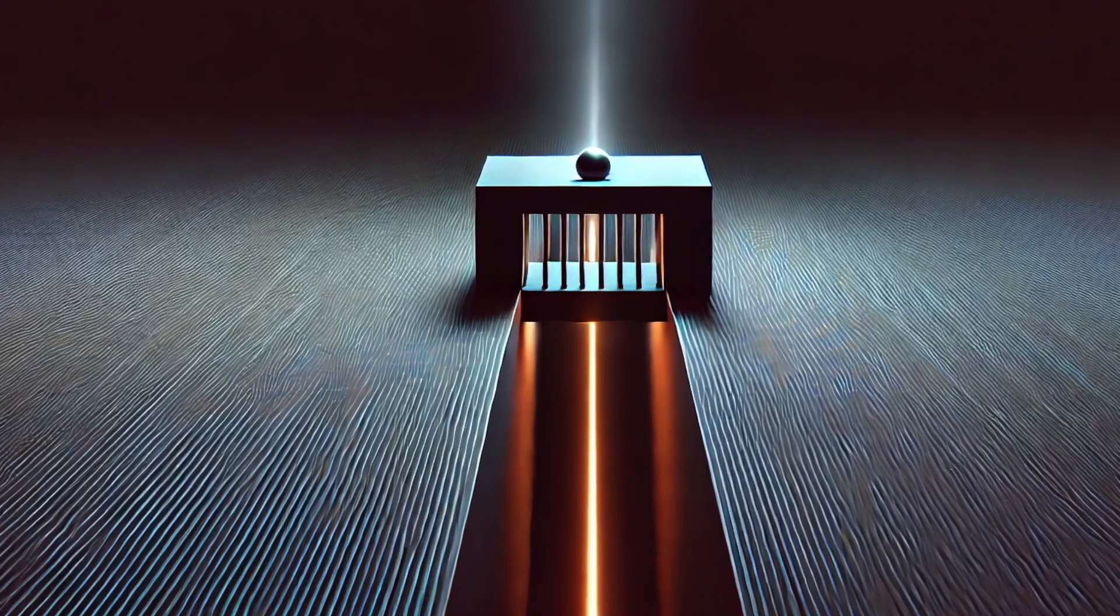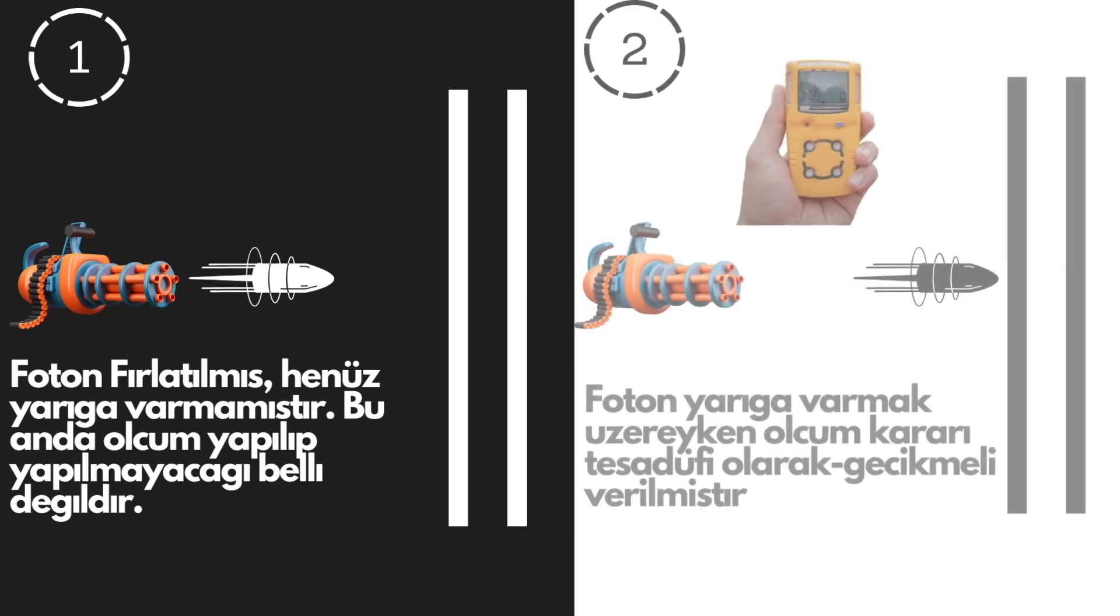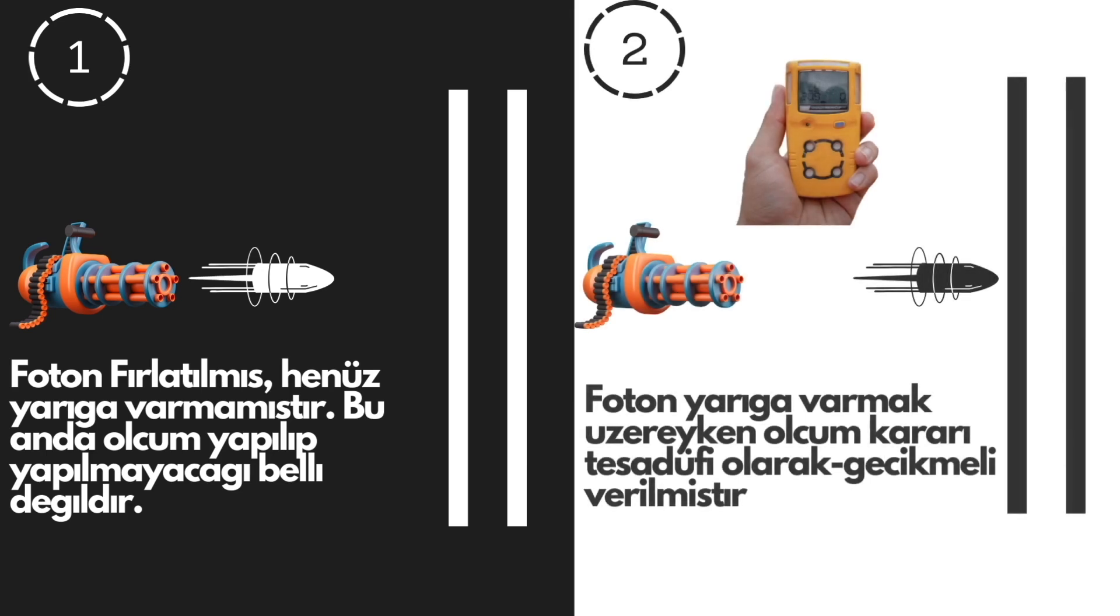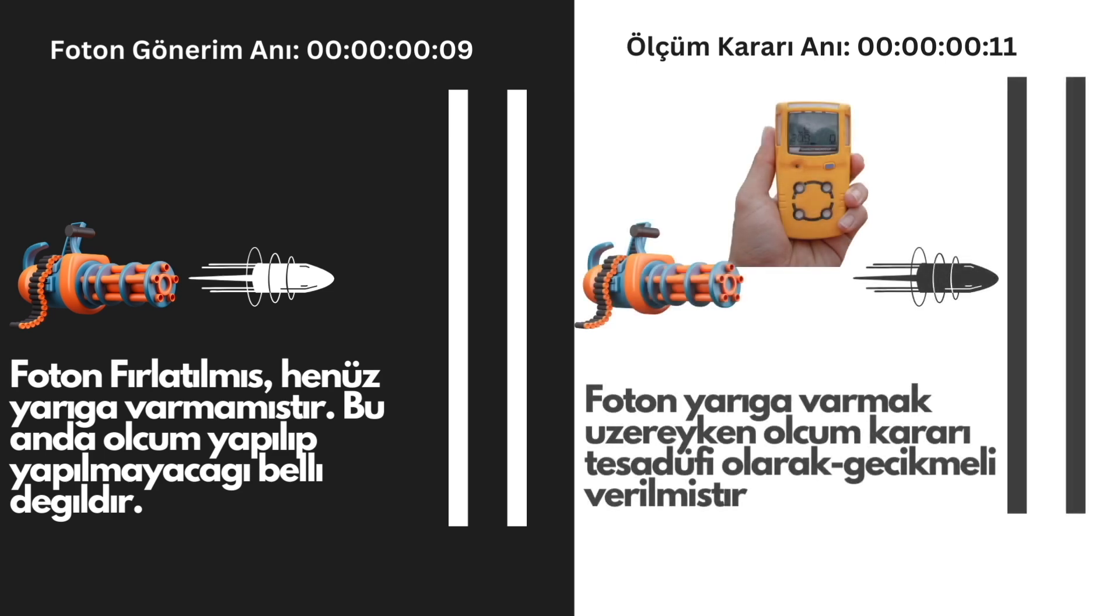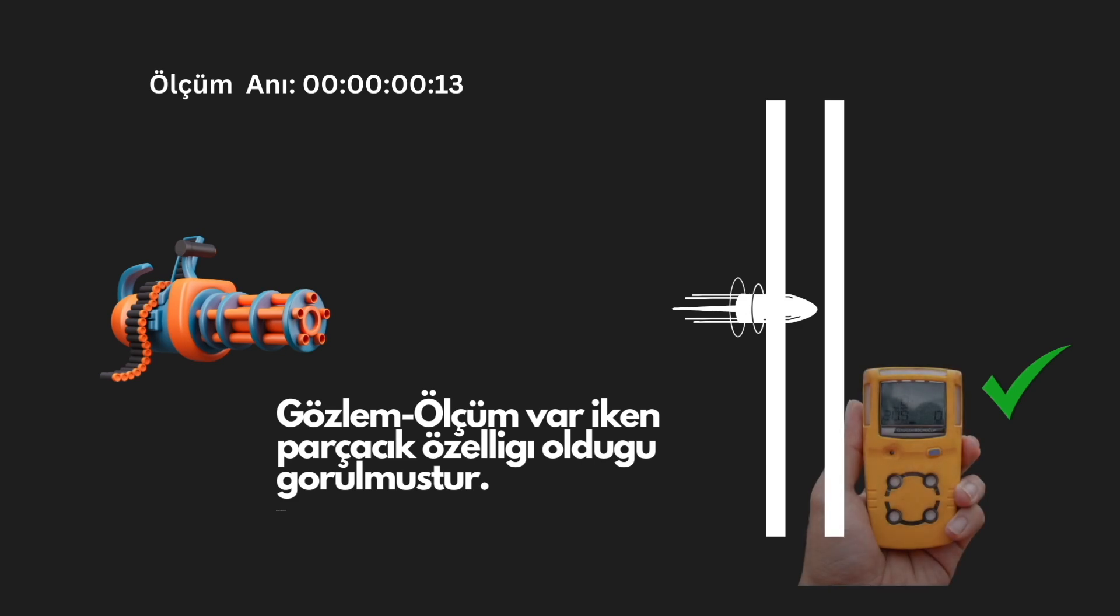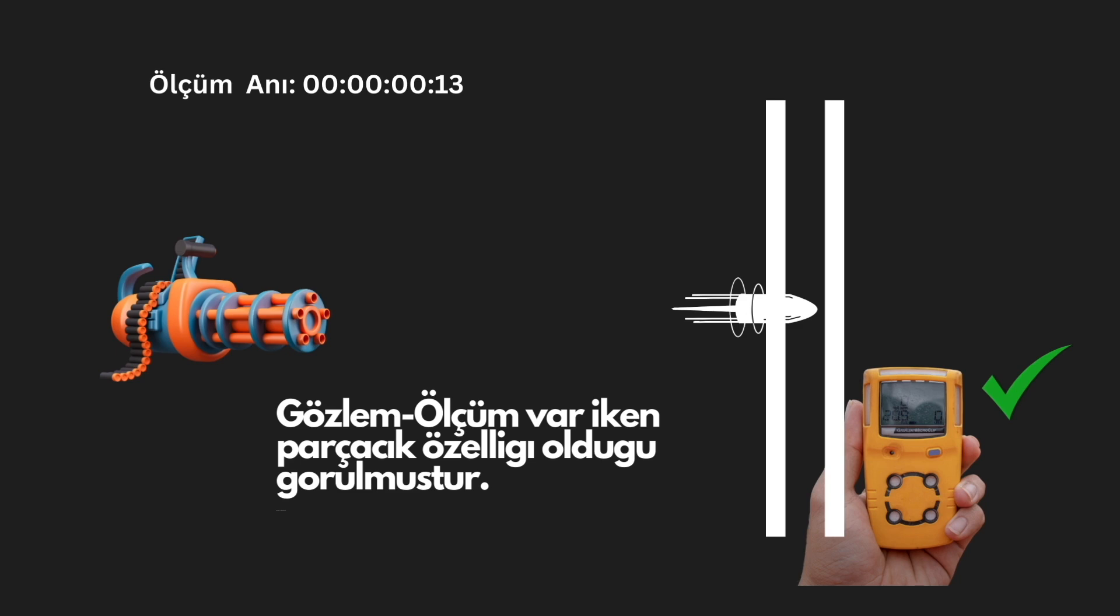For instance, a photon was sent toward the slit at a specific moment, while the measurement decision was randomly made slightly later, and the measurement itself occurred when the photon reached the slit. The results were surprising to some, but not to others.